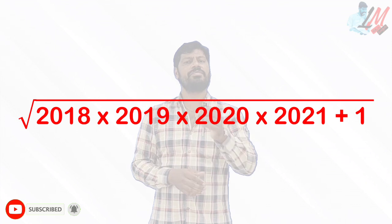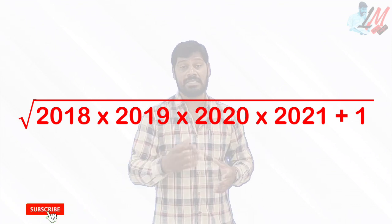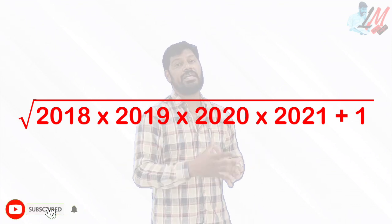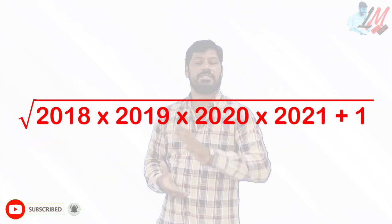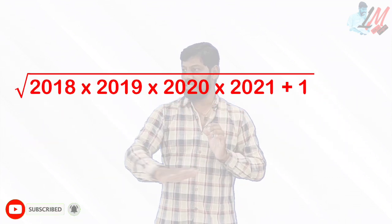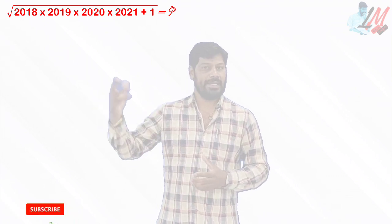Just with the help of a simple concept that we used to learn in 10th class — nothing but quadratic equations — this problem becomes more interesting. We are asked to find the value of the entire expression: square root of 2018 × 2019 × 2020 × 2021 plus 1.